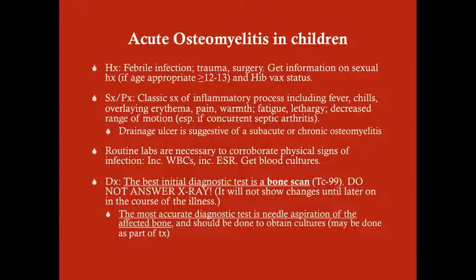What do we look for in the history of a patient with acute osteomyelitis? Many will have been recently sick, since they needed something to cause the bacteremia that precipitated the osteomyelitis. Look for a history of febrile infection, penetrating trauma, or any kind of surgery. Get information on sexual history if age-appropriate — definitely anyone 12 or 13 and older. Also ask about their HIV status and Haemophilus B vaccination status, as that affects treatment.